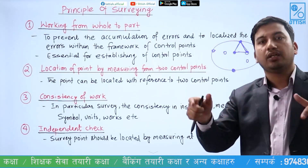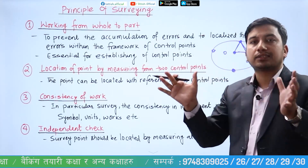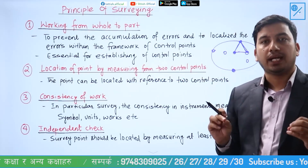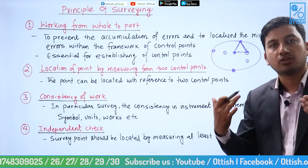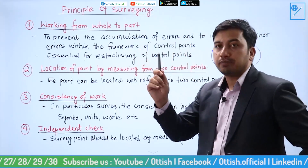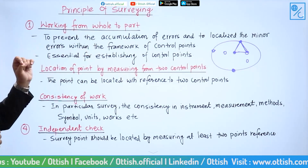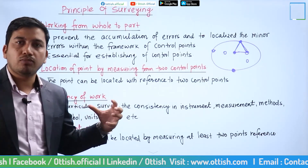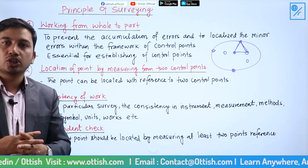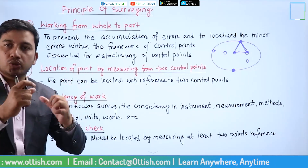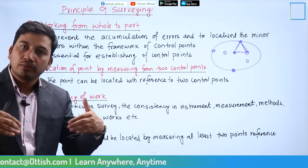There is a correction area between the survey areas. This is the point where we start and expand, and as the conditions change, the error changes. So I am able to control this. The first principle — working from whole to part — is to prevent the accumulation of error. The error changes cumulatively, and the pattern changes.